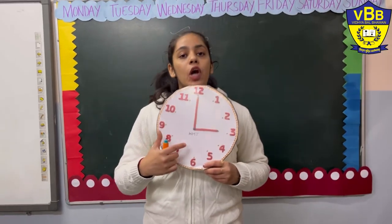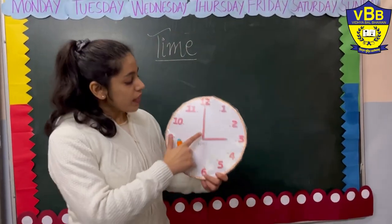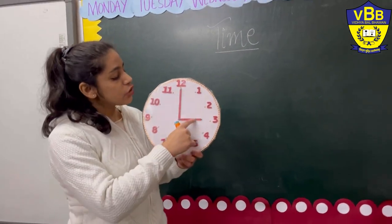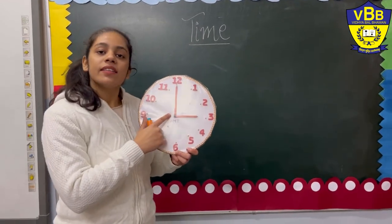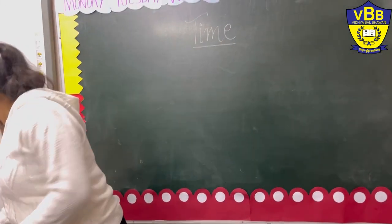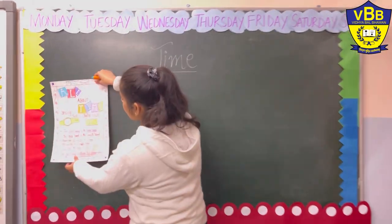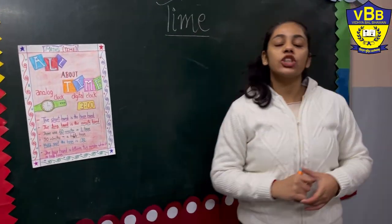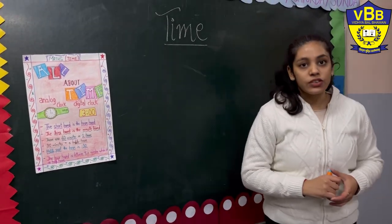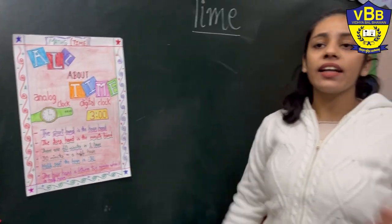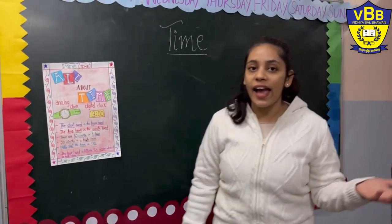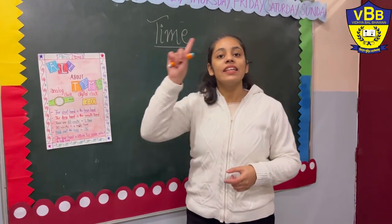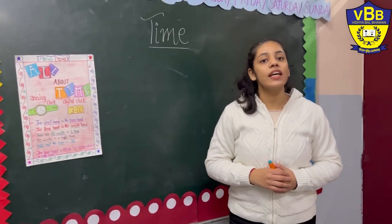We call them hands. The longer one is known as the minute hand, and the shorter one is called the hour hand. Why are they called the minute hand and hour hand? Because the long hand tells us about the minutes and the short hand tells us about the hours. The clock has two hands, and sometimes a watch or clock has a third hand also — that is known as the second hand, which tells us about the seconds.